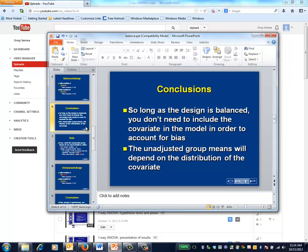The conclusion of the exercise is, so long as the design is balanced, you need not, and if you decide not to include a covariate, you won't induce a bias. The unadjusted mean responses, however, will depend on the distribution of the covariate. Whether this is important or not depends upon the context of the analysis.